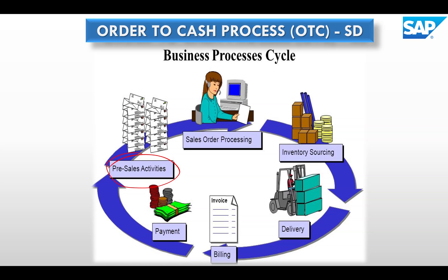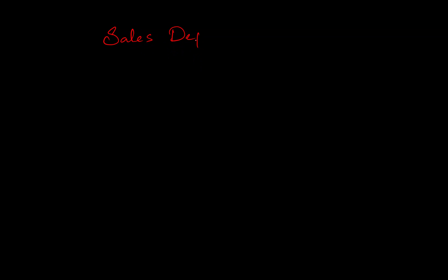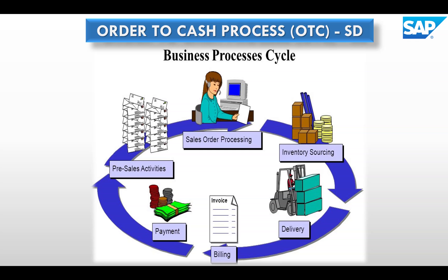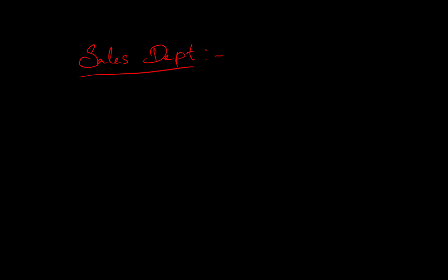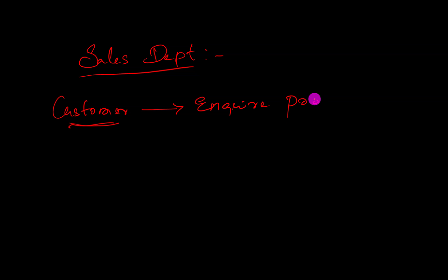The first part is the pre-sales activity. Let's take an example: if you're working in the sales department, the customer will inquire about a product based on their requirement. Based on that inquiry, we need to generate a quotation.